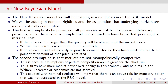The second assumption is that markets are not perfectly competitive — they are monopolistically competitive, not perfectly competitive. Assumptions of perfect competition aren't really suited for the short run because firms do have some market power over pricing. And because of that, the welfare theorems of economics are not satisfied. So that, coupled with the existence of nominal rigidities, implies that there's an active role for monetary and fiscal policy that wasn't suggested in the real business cycle model.